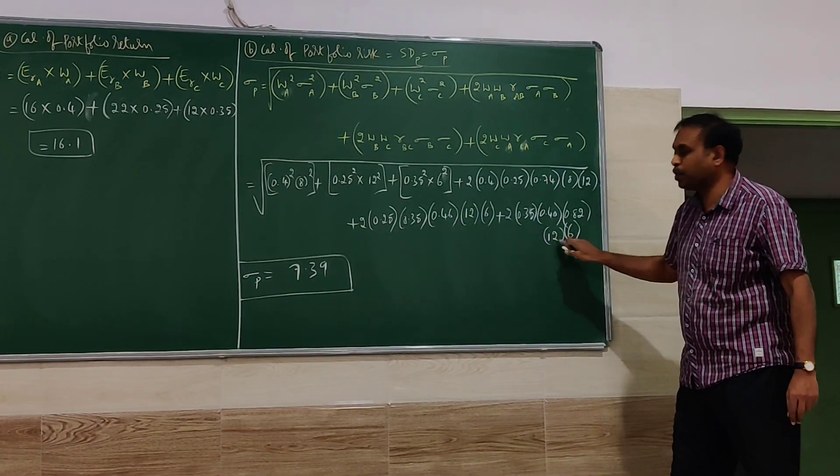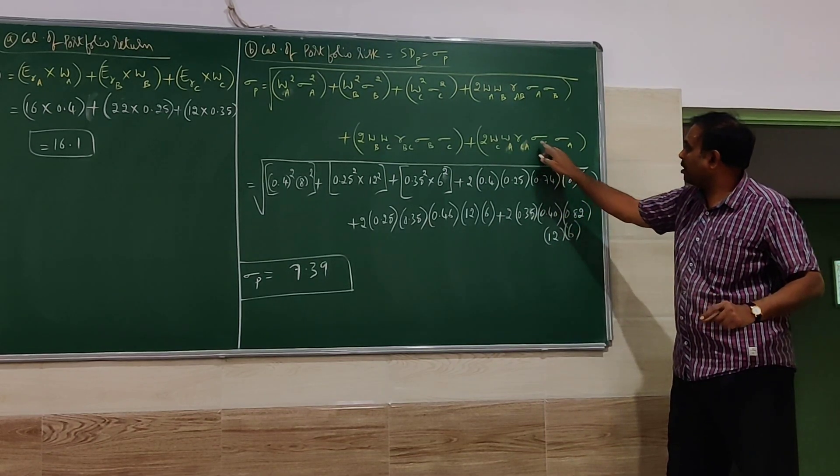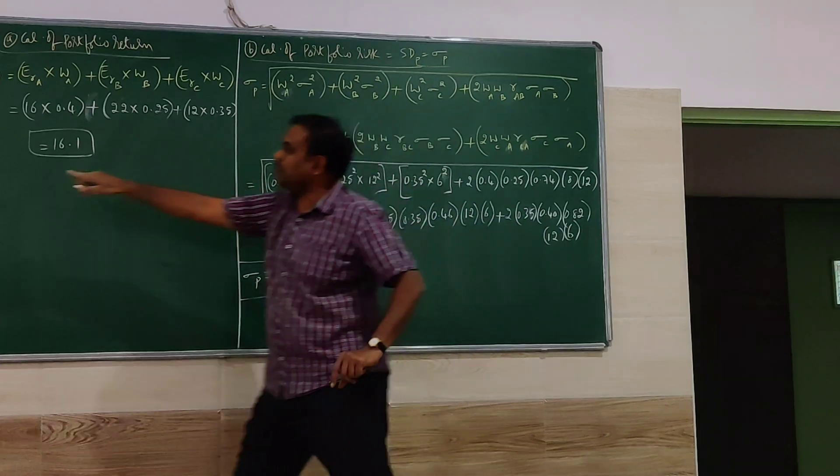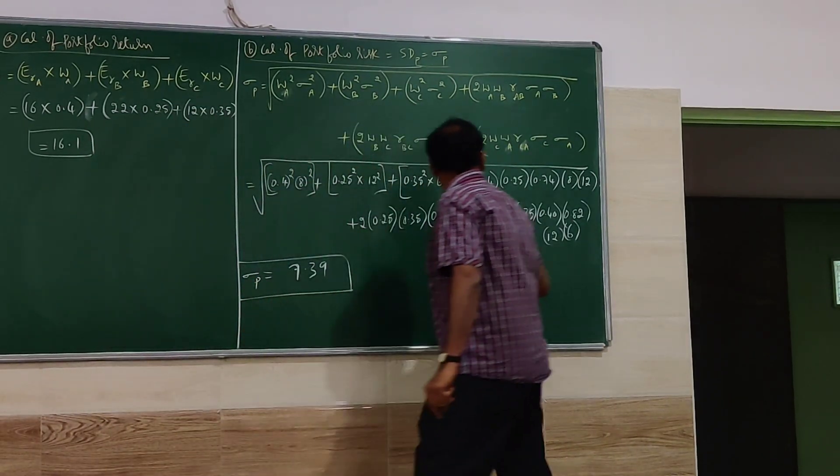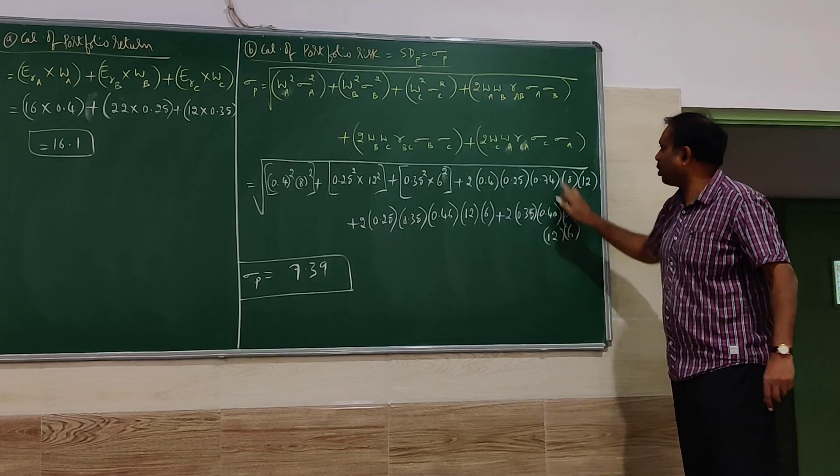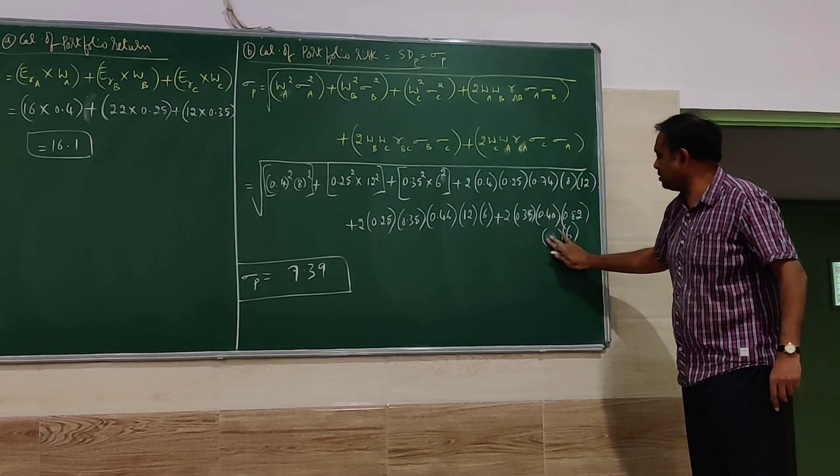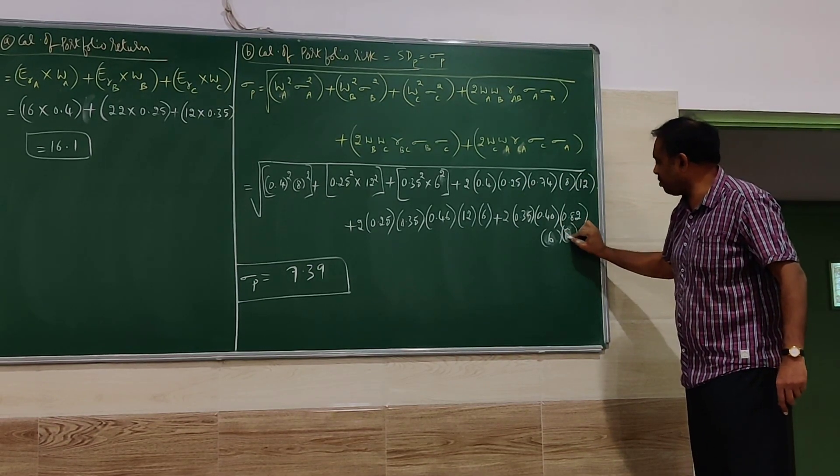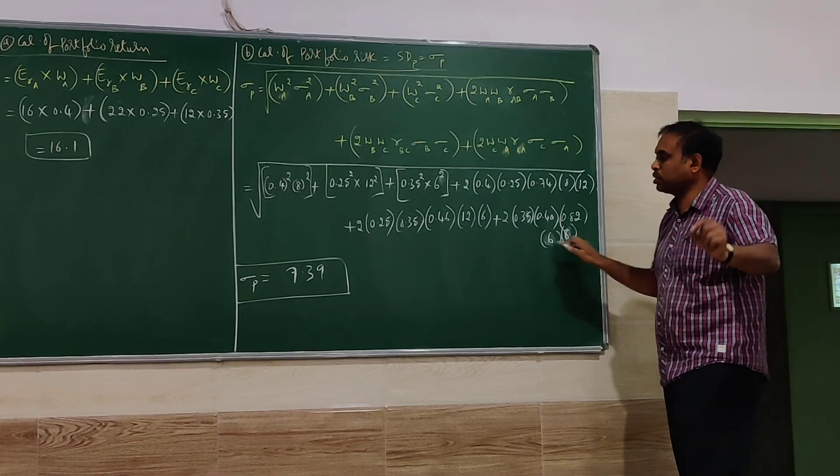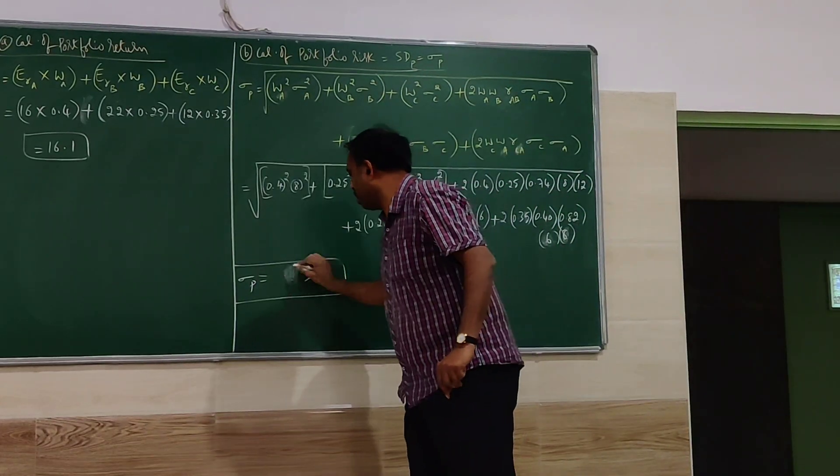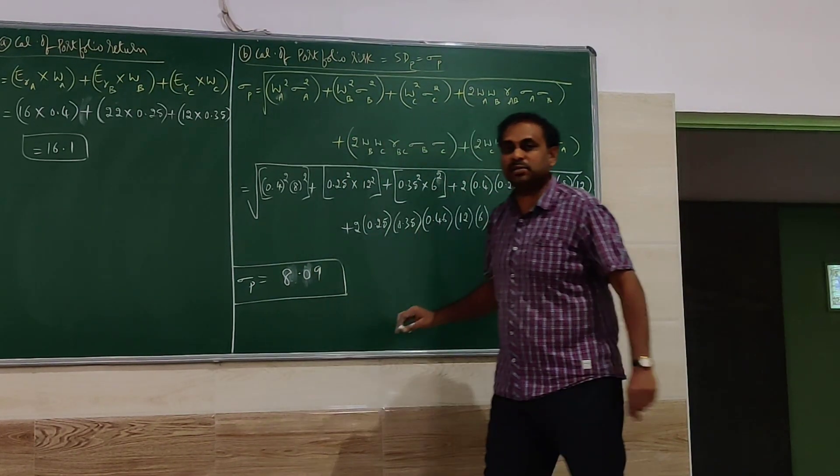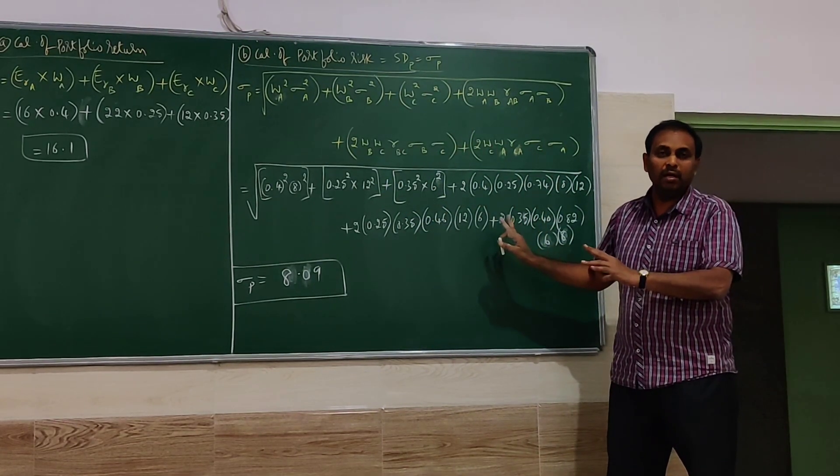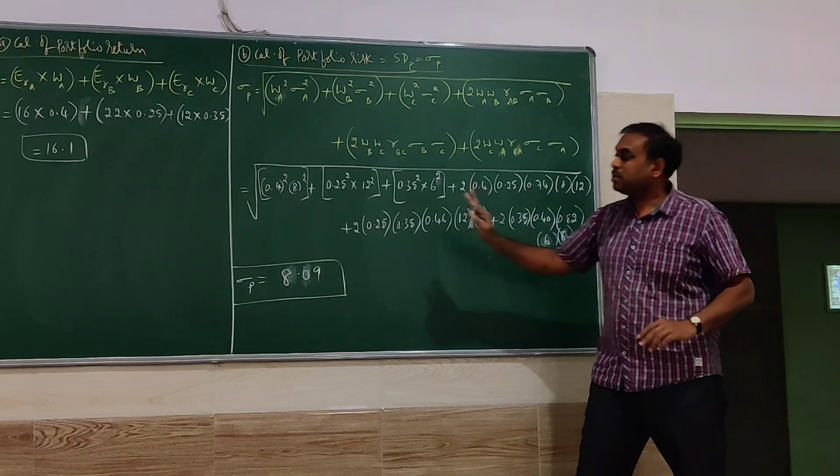There is one small substitution problem. Here standard deviation of C, standard deviation of A. Standard deviation of C is 6, B is 12. I have done something wrong here. Standard deviation of C is 6, standard deviation of A is 8. Because the substitution has gone wrong, the answer has also gone wrong. 8.09 is the answer.